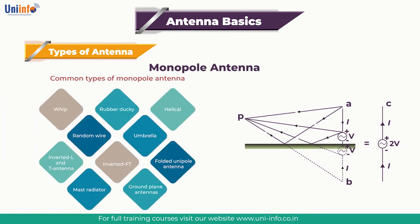Common types of monopole antennas include the whip, rubber ducky, helical, random wire, umbrella, inverted L and T antenna, inverted F, folded unipole antenna, mast radiator, and ground plane antennas.